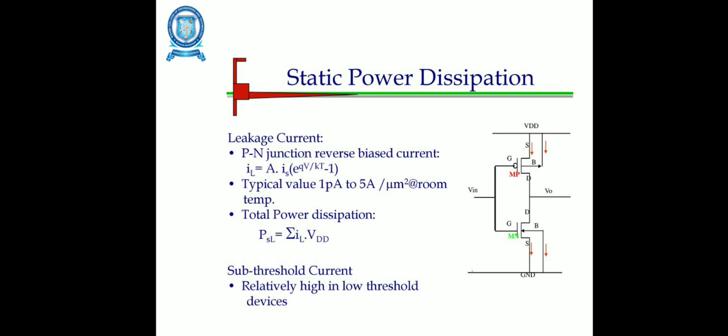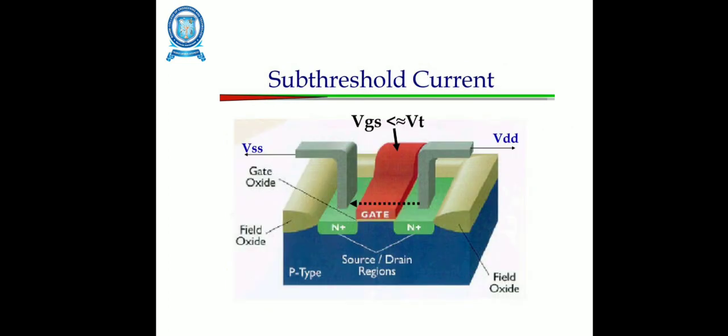In the case of leakage current, this PN junction reverse biased current has a typical value dependent on temperature and has power dissipation of PSL equal to summation IL times VDD. In the case of subthreshold current, it is relatively high in low threshold devices. This can be implemented in VLSI, introduced as power consumption to enhance the overall efficiency of the design. This mainly occurs as leakage current when the system is not powered or in standby mode. Various causes can contribute to this leakage current such as subthreshold leakage, diode leakage, tunnel leakage, and gate leakage.